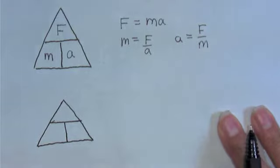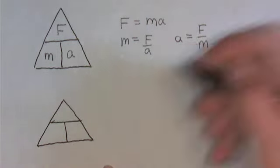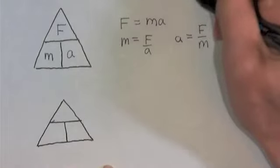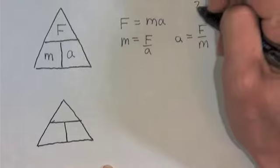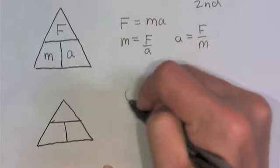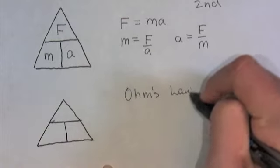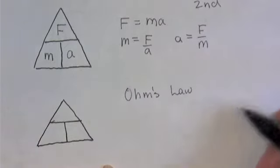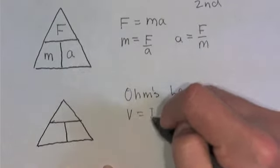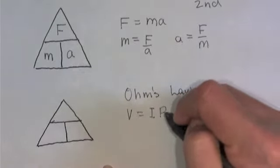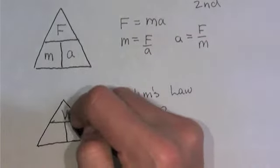We'll do one real quick, another example. Use Ohm's law. So we'll just label this Newton's second. And this is Ohm's law, which we use when we're talking about electrical circuits. And it is V, voltage, equals I current times R resistance. And we put the V up there,